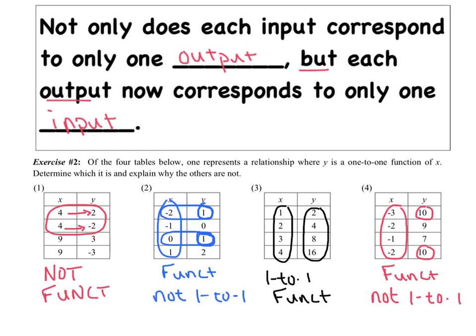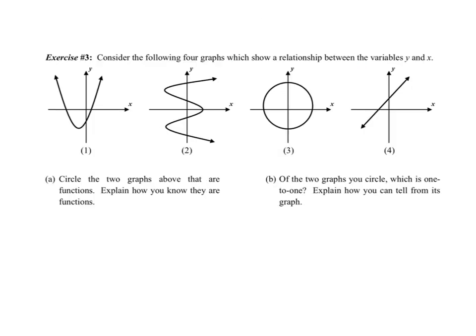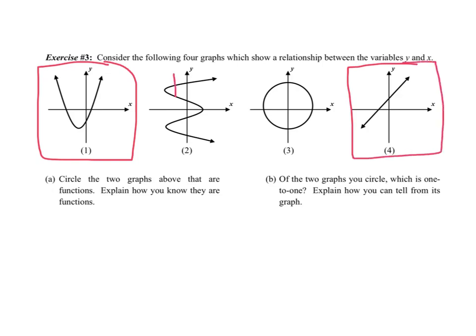We want to make sure all y values are unique for one-to-one. Now we've got some graphs to consider. Part A asks us to circle the two graphs that are functions. This graph passes the vertical line test, and so does this one. The other two graphs have vertical lines that intersect more than once, so those two fail the vertical line test and are not functions.